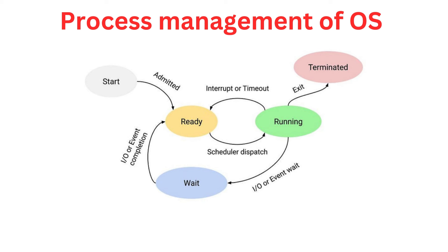An operating system performs several core functions essential for efficient management and operation of a computer system. Process management is crucial as it involves the creation, scheduling, and termination of processes. The operating system allocates CPU time to various processes, enabling multitasking and ensuring that each process receives the necessary resources to execute smoothly. This function also includes handling process synchronization and inter-process communication (IPC) to prevent conflicts and ensure data integrity.